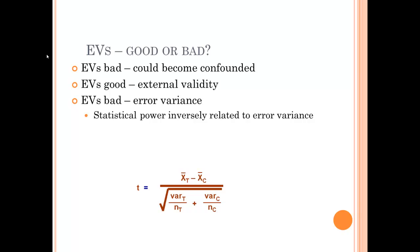Because extraneous variables are sometimes good and sometimes bad, it's impossible to design the perfect experiment. If you have extraneous variables, you'll have good external validity but low statistical power, and those EVs could become confounded. But if you have no extraneous variables, you'll have a very artificial, fake experiment that lacks external validity. The point is, you cannot design the perfect experiment — ever. That's it for today.